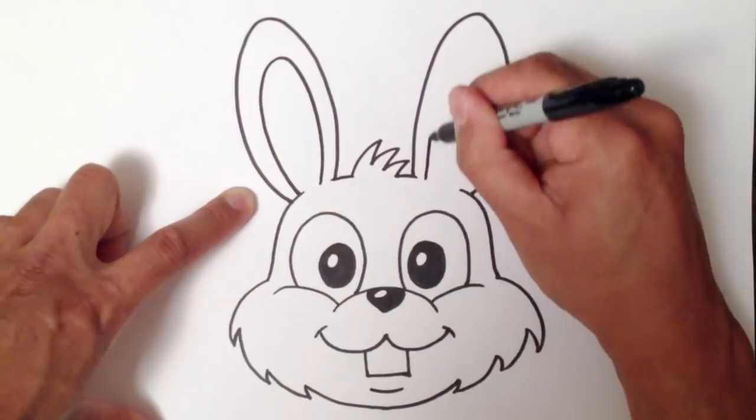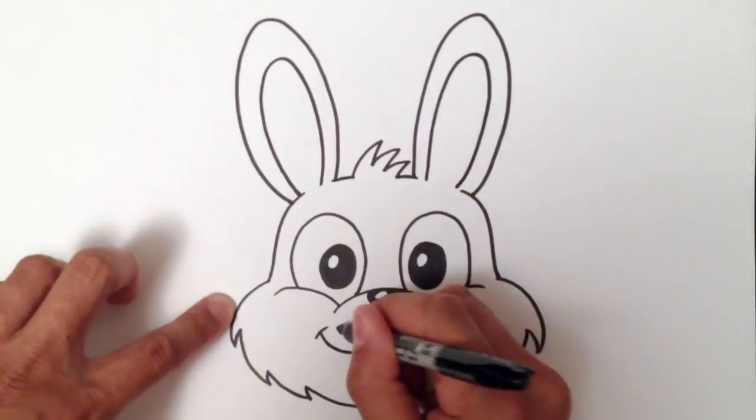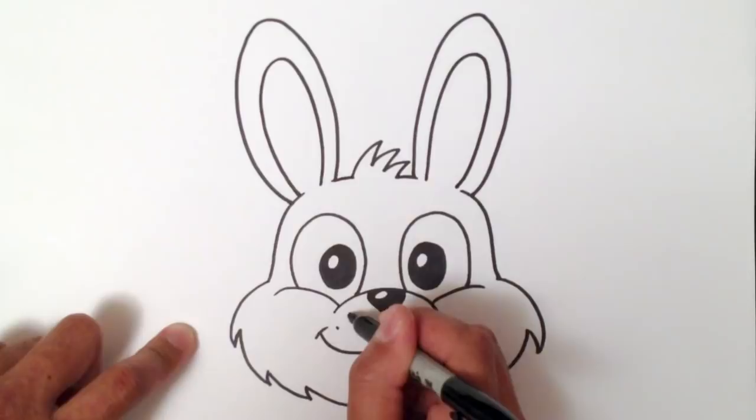Now I'm going to draw three dots like so. Now let's draw the whiskers. One, two, three.